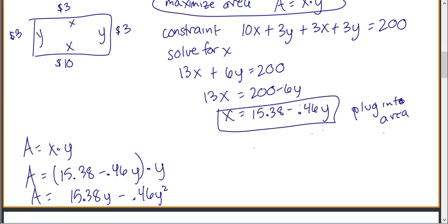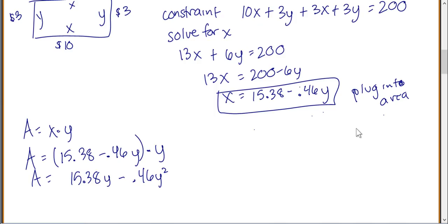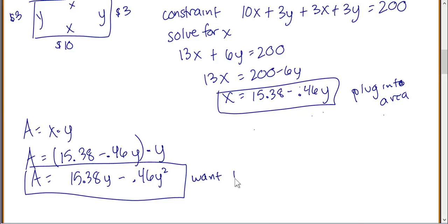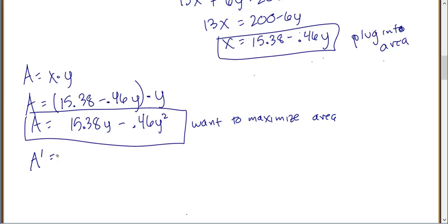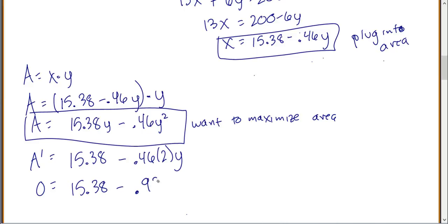That might seem like a lot of work, and it is. But we've finally gotten our equation for what we want to maximize down to just one variable. Now we find the maximum like normal — take the derivative: a′ = 15.38 minus 0.46 times 2y. Set that equal to zero: 0 = 15.38 minus 0.92y. Solving gives y equals 16.72.